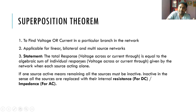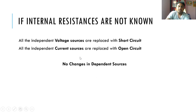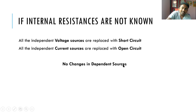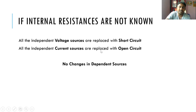We do not make any changes to dependent sources — we are not going to handle dependent sources at all. All independent voltage sources are replaced with a short circuit, and all independent current sources are replaced with an open circuit.